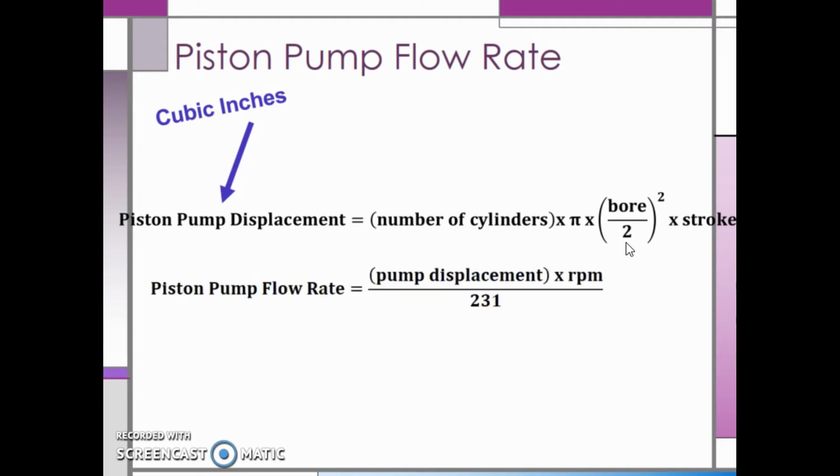Once you find the piston pump displacement, then you can find the piston pump flow rate. The piston pump flow rate is equal to the piston pump displacement multiplied by the speed in revolutions per minute divided by the constant 231. The piston pump flow rate will be in gallons per minute.